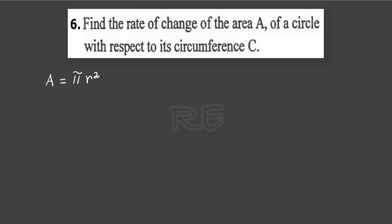The formula for area of a circle is pi r squared and the formula for circumference of a circle is 2 pi r.